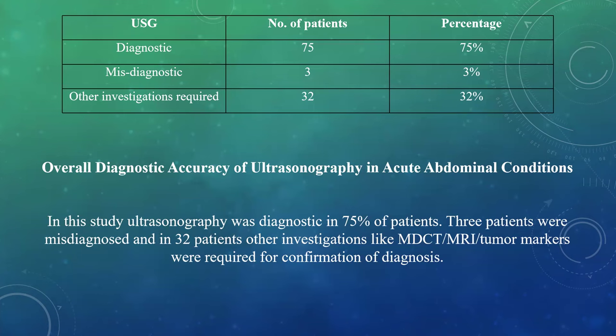Overall diagnostic accuracy of ultrasonography in acute abdominal conditions: in this study, ultrasonography provided diagnosis in 75% of patients. 3 patients were misdiagnosed and in 32 patients, other diagnostic investigations like multi-detector CT, MRI or tumor markers were required for confirmation of diagnosis.